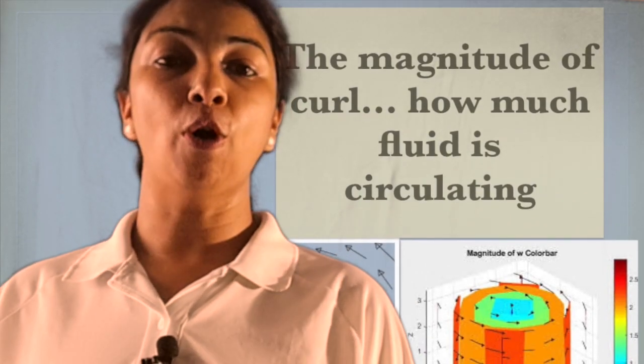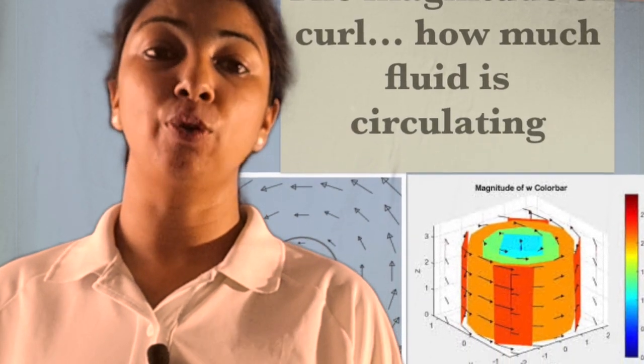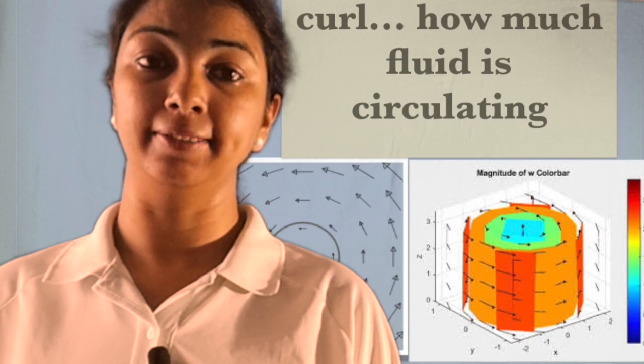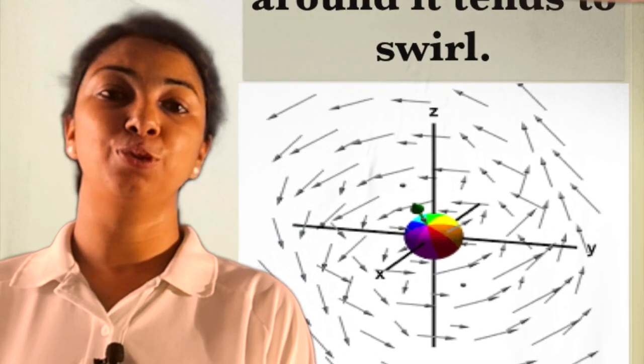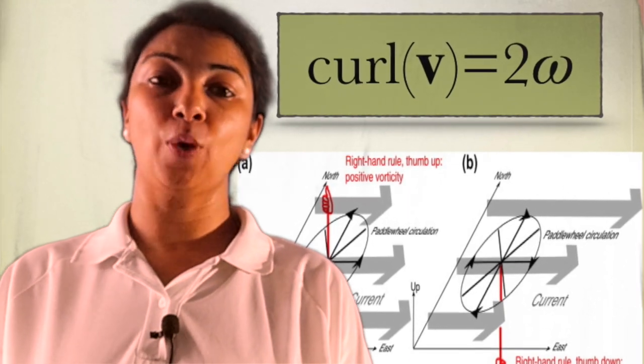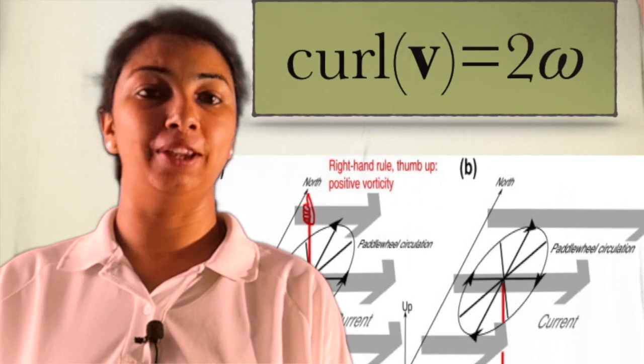The magnitude of curl gives how much fluid or field is rotating or circulating. Direction indicates the axis around which it tends to swell. The magnitude of the curl is twice as compared to the angular velocity vector of that field.